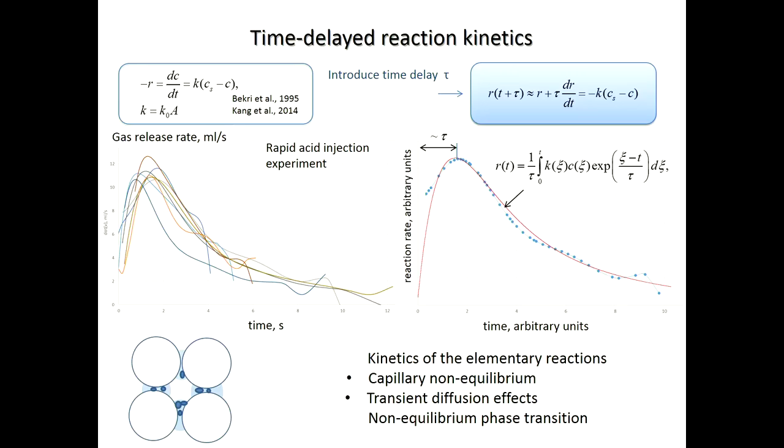When acid is injected into the porous medium, the concentration of the acid decreases in time due to reaction, and surface of contact decreases too. One can expect that reaction rate will decrease in time as well. However, special experiments on rapid acid injection have shown that there is a maximum at about one second of the reaction rate. This means that there is a time delay between the penetration of the acid solution into the porous medium and the reaction.